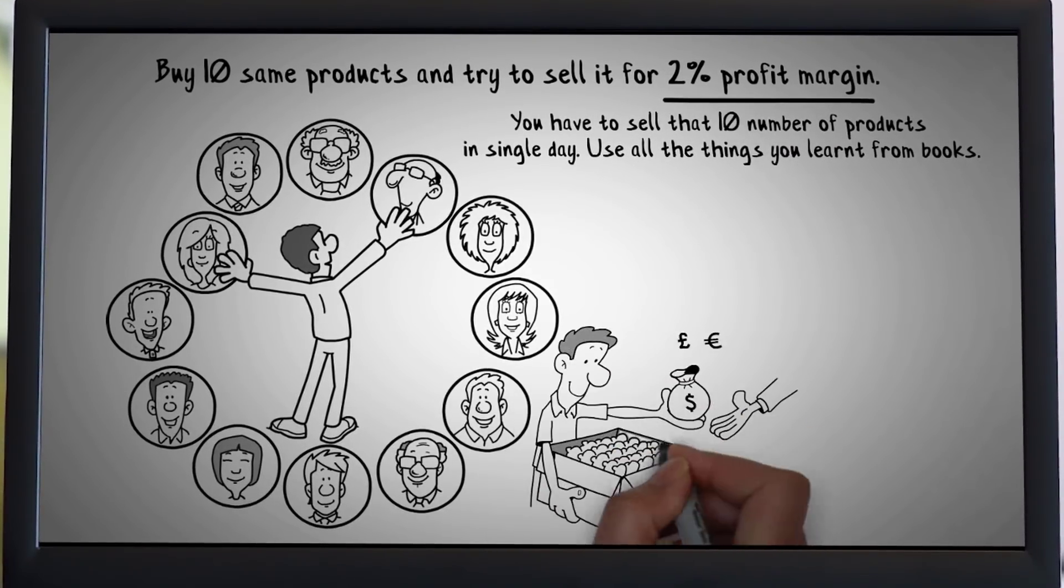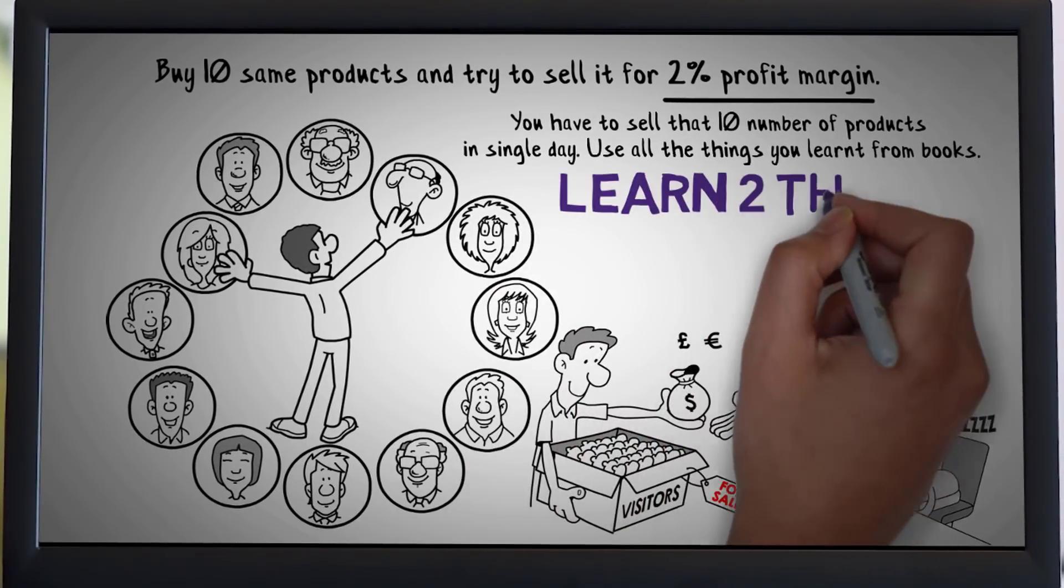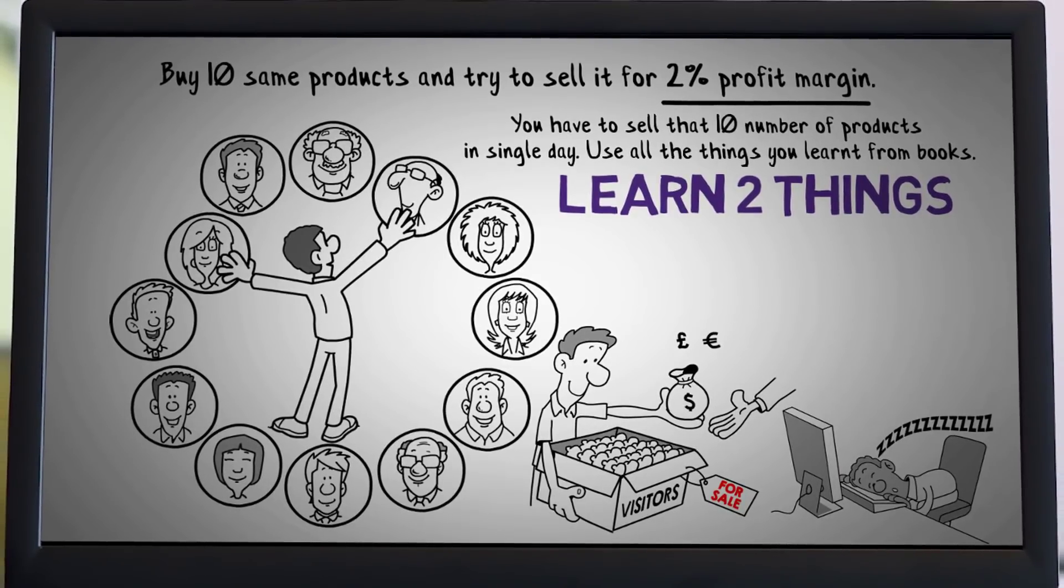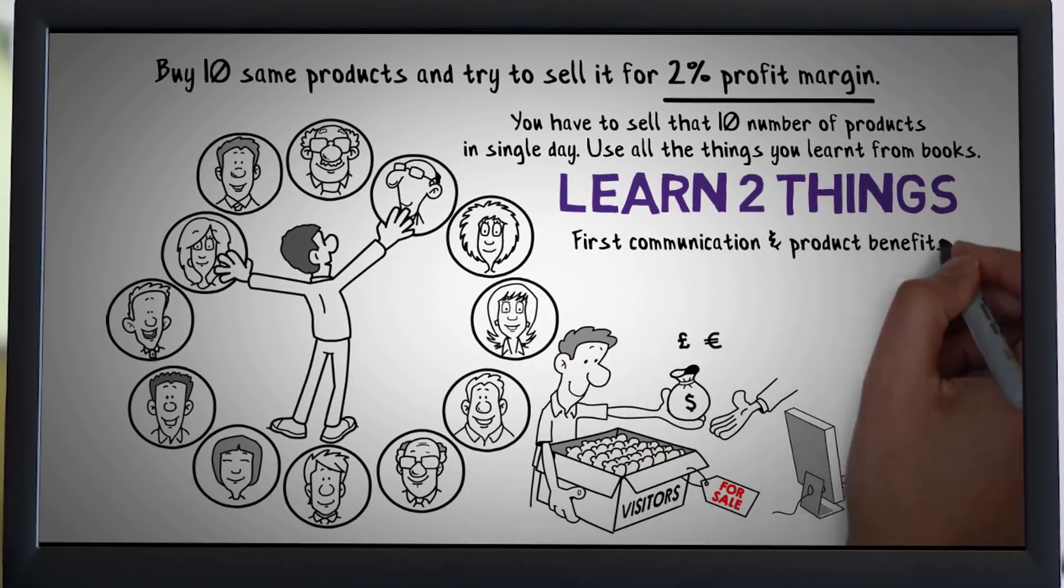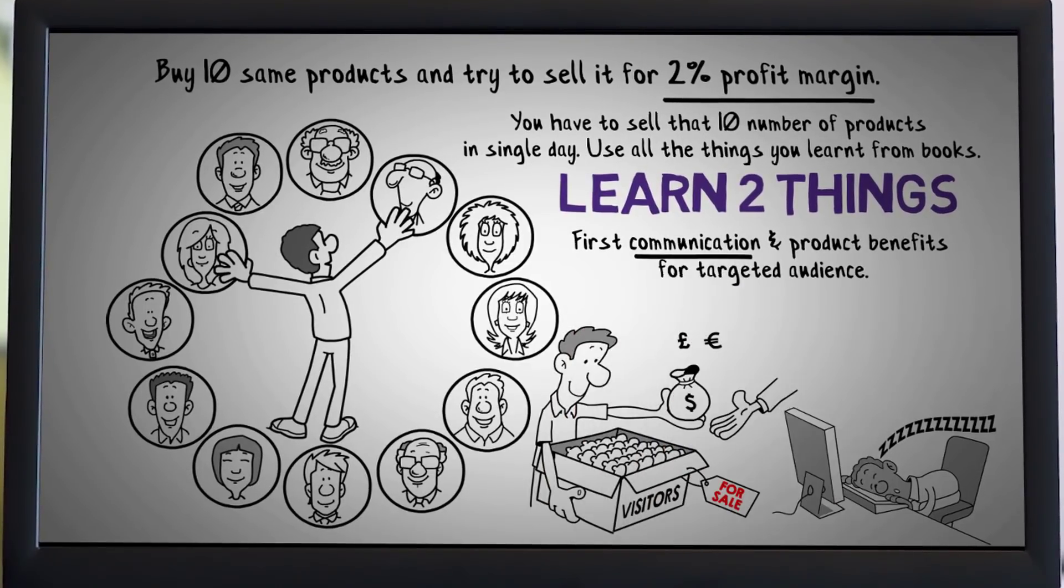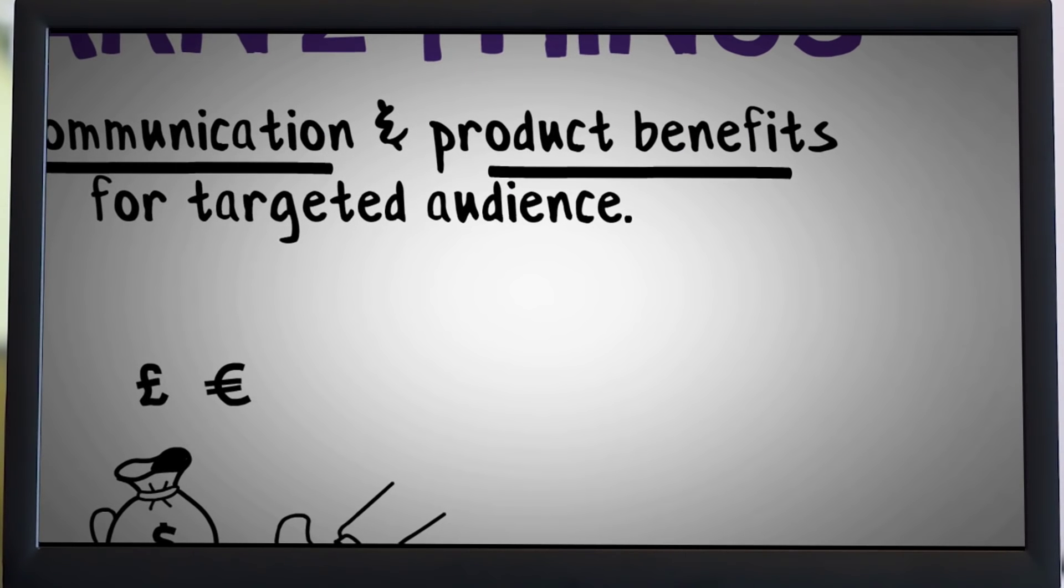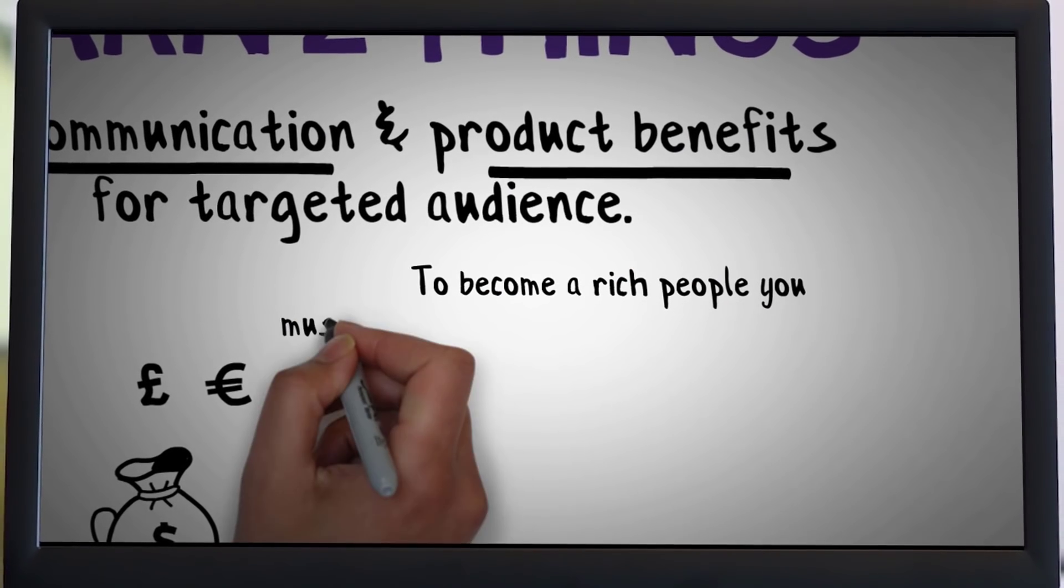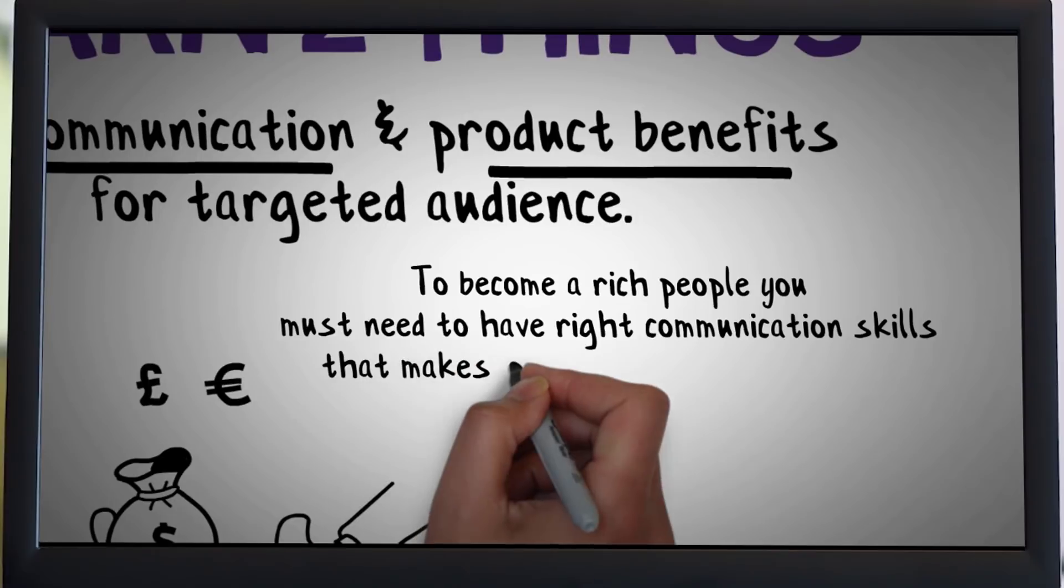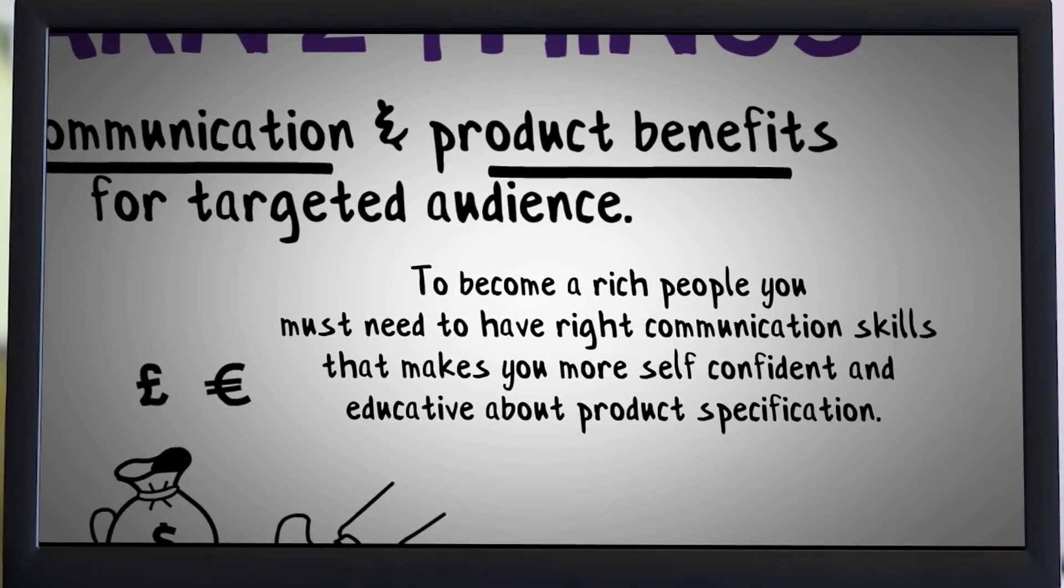Some people can sell it and some can't. If you are unable to sell any product, then you need to learn two things. First is communication and second is product benefits for a target audience. These two things can be learned from reading communication books and product manuals. To become rich people, you must need to have the right communication skill that makes you more self-confident and educated about product specification.